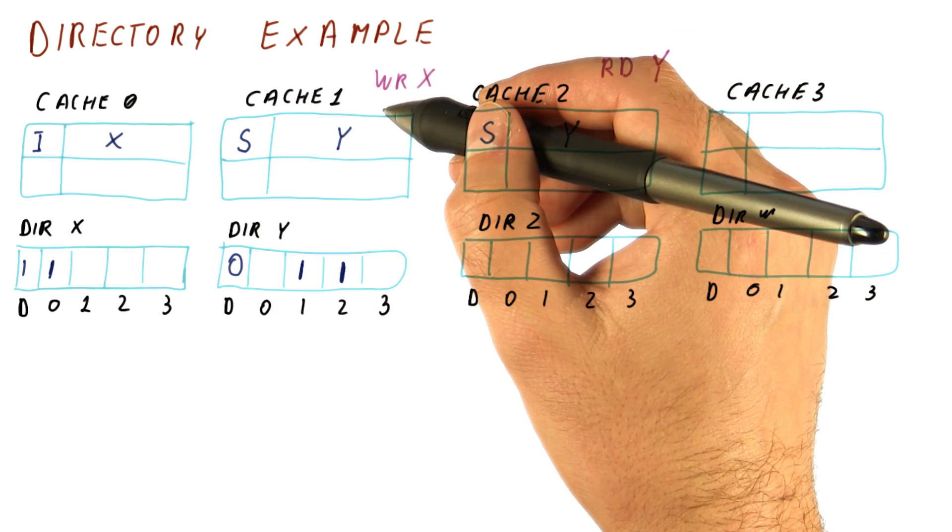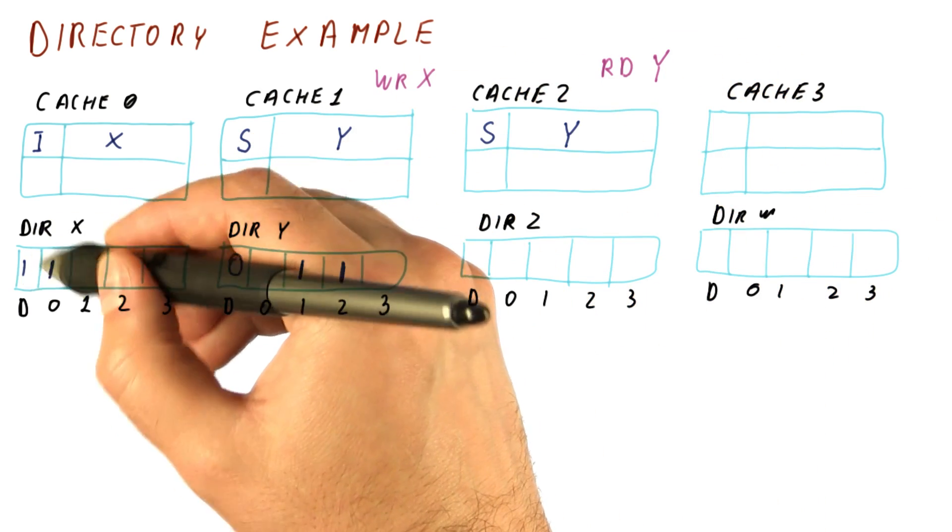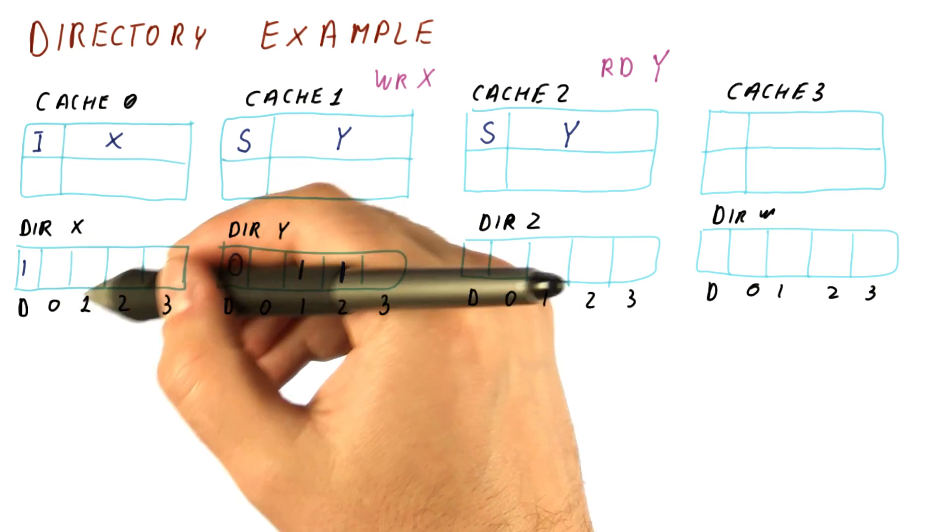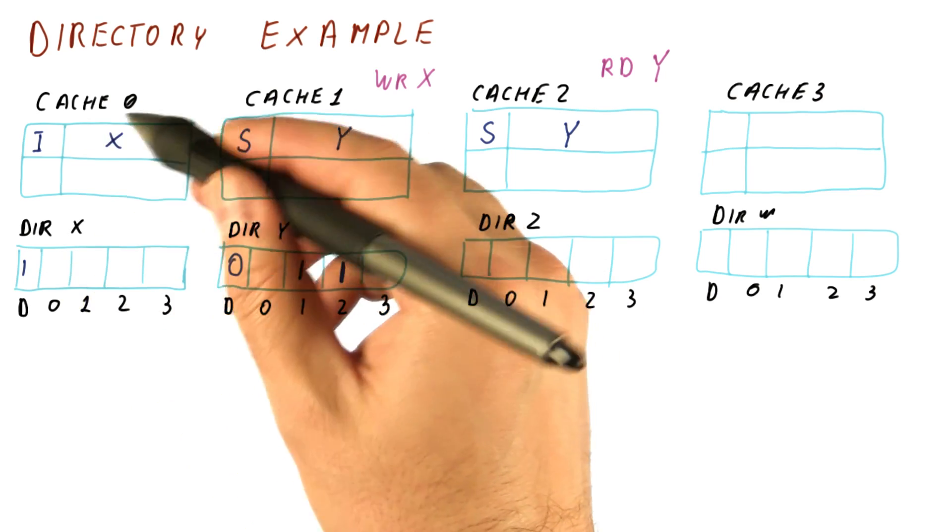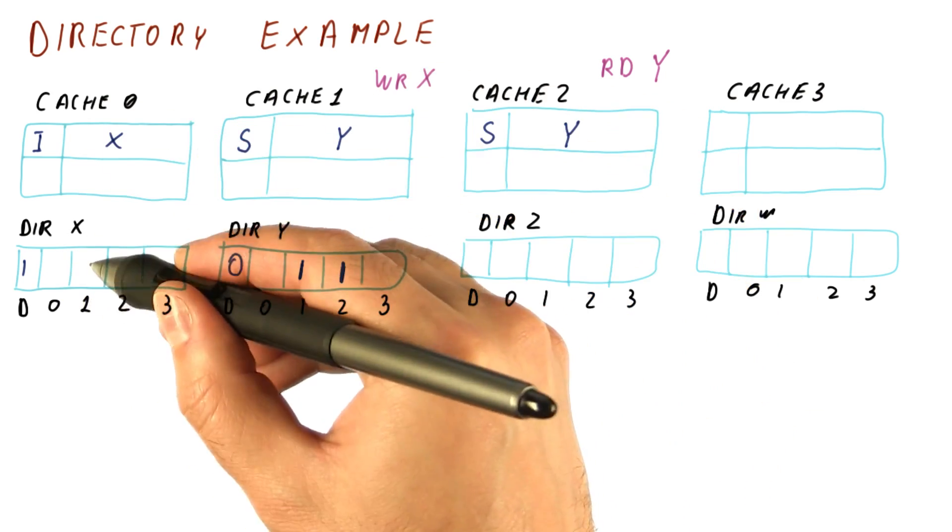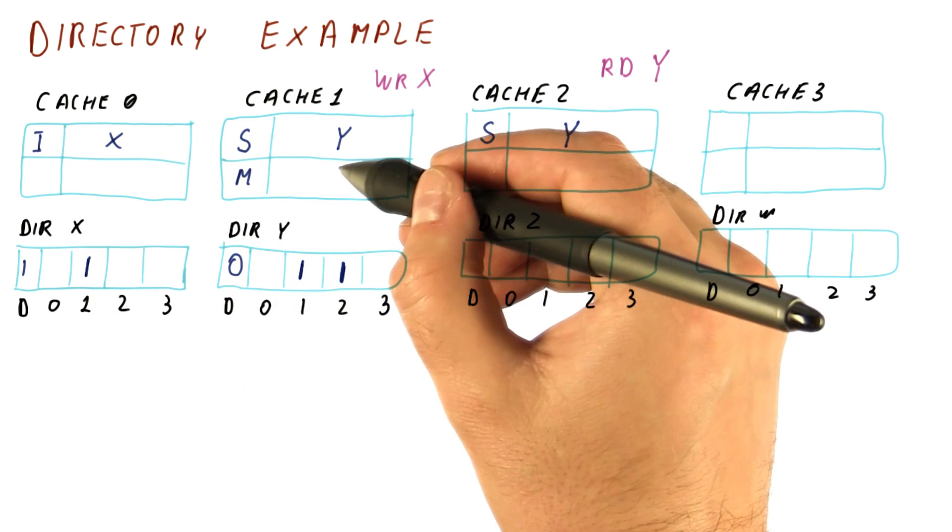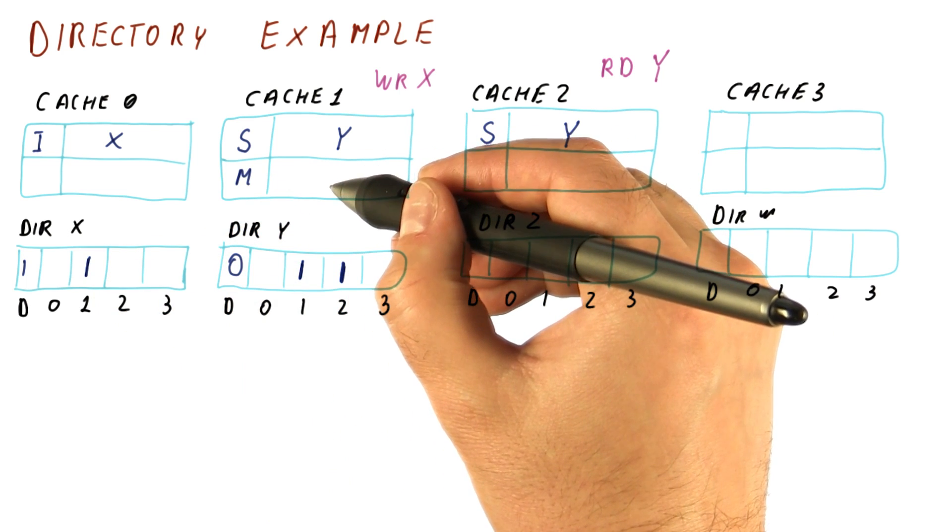This is also a write, so the block will remain dirty. But now, the directory knows that cache zero no longer has the data, and we send the data to cache one. So now cache one will eventually get the data in the modified state.